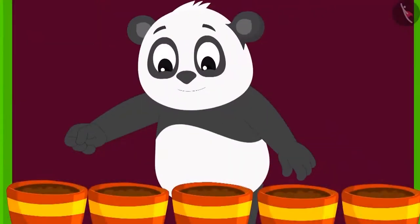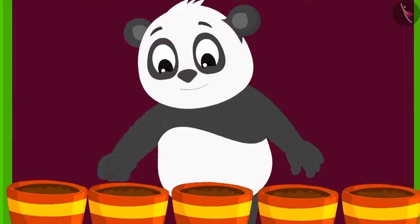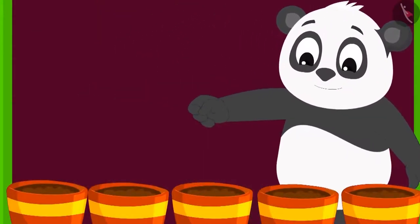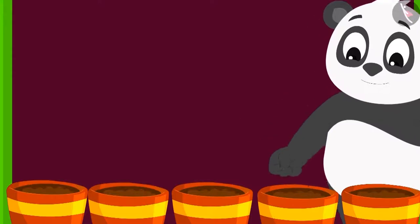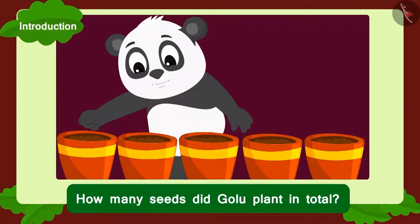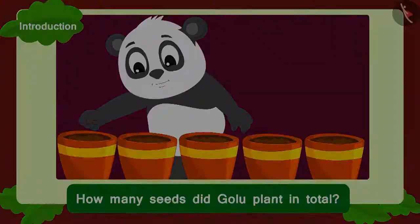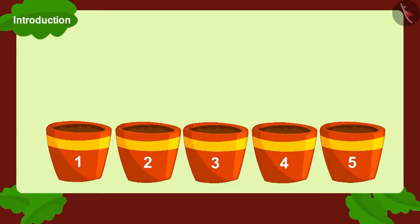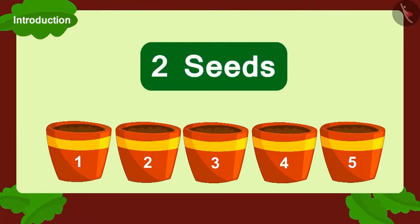Golu planted two seeds each in five pots. Can you tell how many seeds did Golu plant? In all, Golu planted seeds in five pots, and he planted two seeds in each pot.